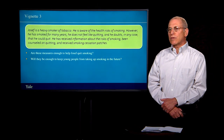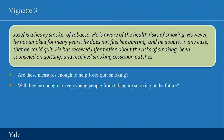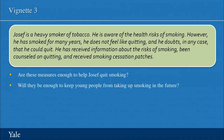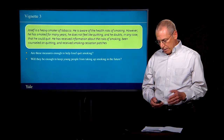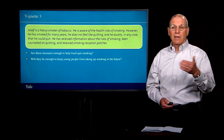Finally, let's talk about Josef. Josef smokes tobacco. He's aware of the health risks, but has smoked for many years, smokes a lot, and doesn't feel like quitting — he doubts he could quit. He's received information from the health ministry and family about the risks of smoking, has been counseled on quitting, and received nicotine replacement and smoking cessation patches, but just can't quit. What's the possibility that the Ministry of Health alone can help people like Josef reduce tobacco consumption, when the single most important policy measure — raising taxes — is in the purview of the Ministry of Finance, not the Ministry of Health?